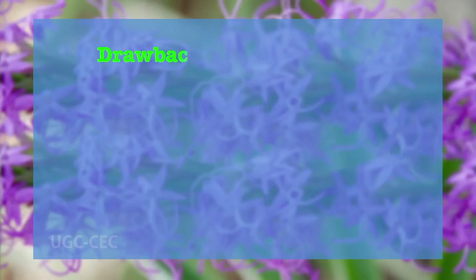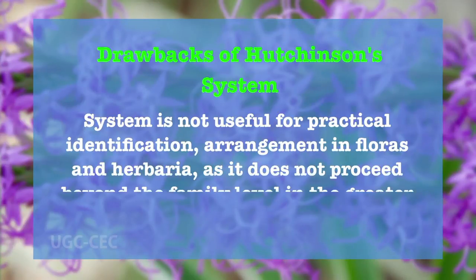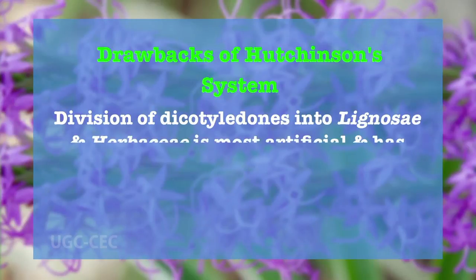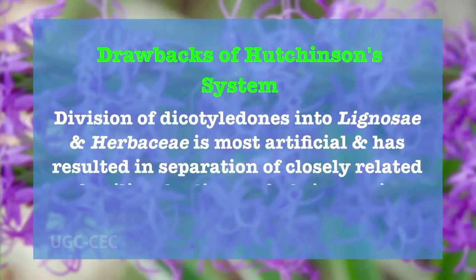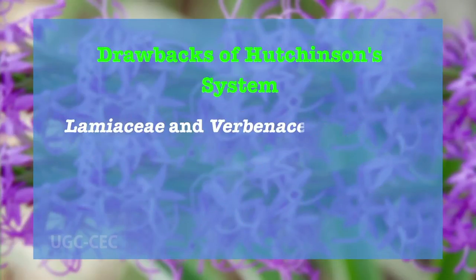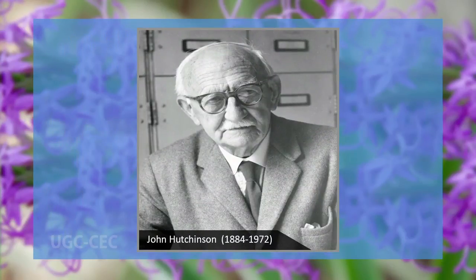The classification of Hutchinson has largely been ignored as it mostly did not proceed beyond the family level and gave much importance to habit. The major drawbacks of the system are: the system is not useful for practical identification, arrangement in floras and herbaria, as it does not proceed beyond the family level in the greater majority of taxa. The division of dicotyledons into Lignosae and Herbaceae is most artificial and has resulted in the separation of closely related families — Araliaceae and Apiaceae — in Lignosae and Herbaceae respectively.